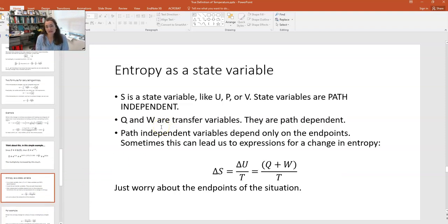Now this leads me to a discussion of state variables versus path-dependent variables. Here we can see that s is a state variable like u, p, or v, or n or T. State variables are path-independent. This makes them different from q and w, which are transfer variables. Those are path-dependent. We talked about this before. Remember that path-independent variables, state variables, depend only on the endpoints. So this can lead us sometimes to expressions for a change in entropy.